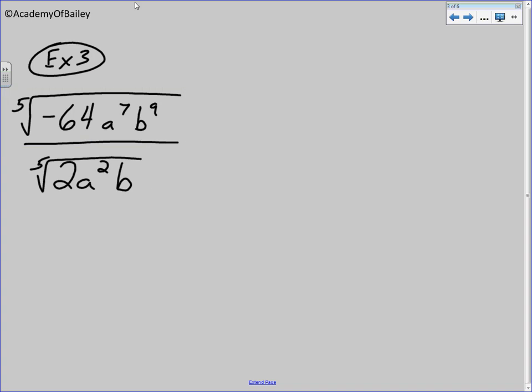So since they're both fifth roots, we know that we're going to have a fifth root here. And negative 64 a to the seventh, b to the ninth on top, and 2a squared b on bottom. We have a fifth root. What's negative 64 divided by 2? That would be negative 32.